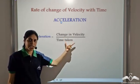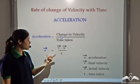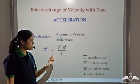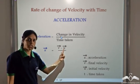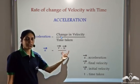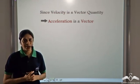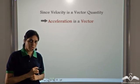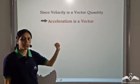Acceleration is the change in velocity divided by time taken. The mathematical formula for acceleration is: acceleration vector a = (v - u) / t, where v is the final velocity, u is the initial velocity, and t is the time taken. Acceleration is a vector quantity because velocity is a vector quantity and acceleration depends on velocity.